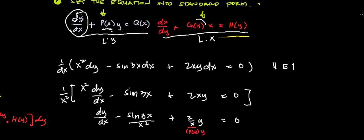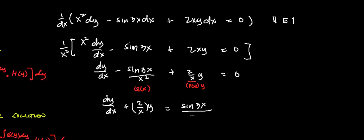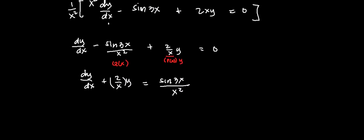So p(x) is 2 over x, and that is multiplied by y. The function of x alone — negative sine 3x over x squared — is on the right side of the equation. Since this is a function of x alone, we can transfer this whole term, q(x), to the other side. So we can now write the standard form: dy over dx plus 2 over x times y is equal to sine 3x over x squared.